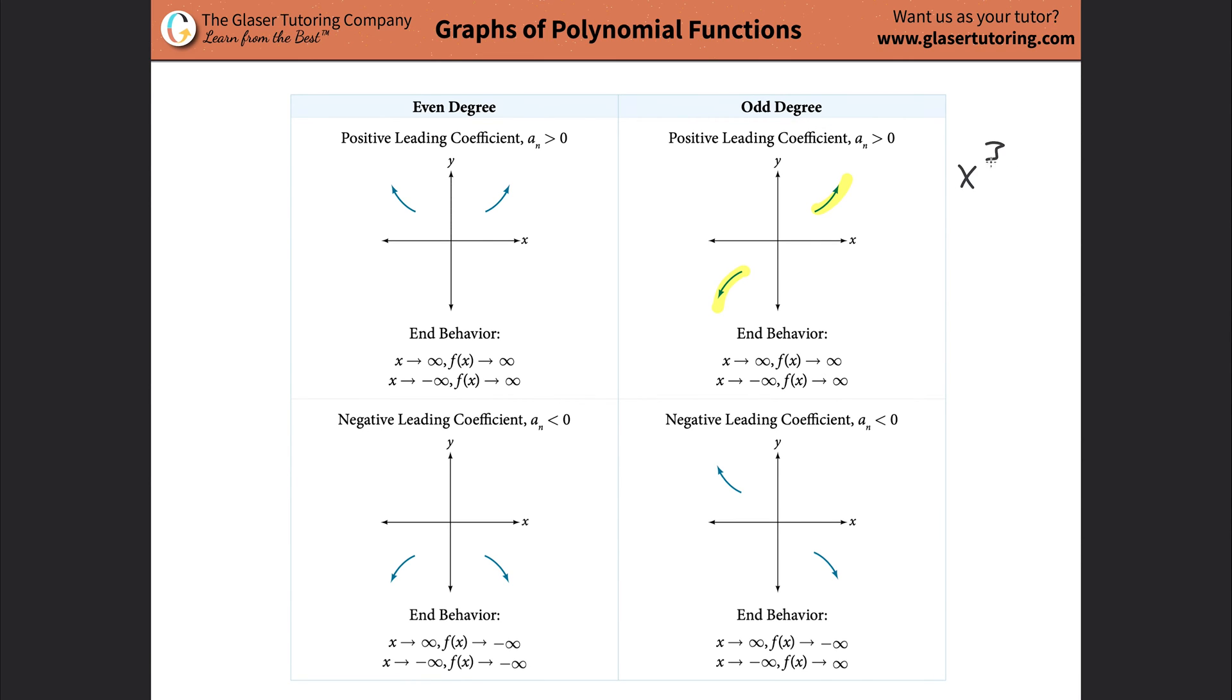Maybe it's an x cubed or maybe it's an x to the fifth or something like that. And what it's also telling me is that I have a positive leading coefficient. In other words, if it was x cubed, that it would be a positive value or positive two or whatever you want to have there, or any other odd value for the exponent, the coefficient would be positive. If you notice, every one of these four pictures looks identical. So you can memorize this if you want.